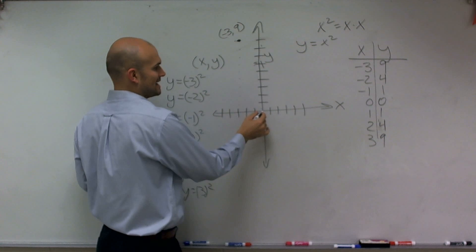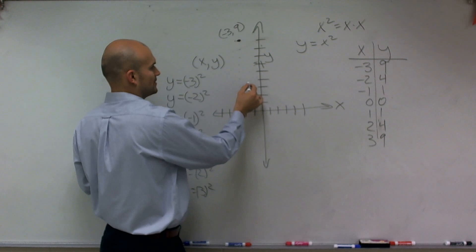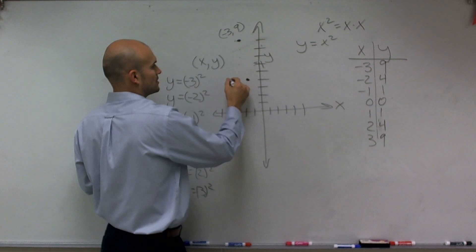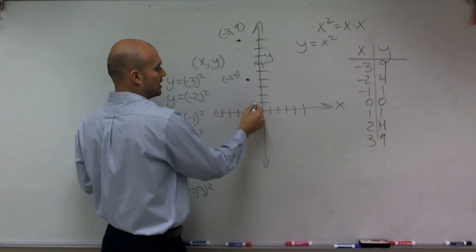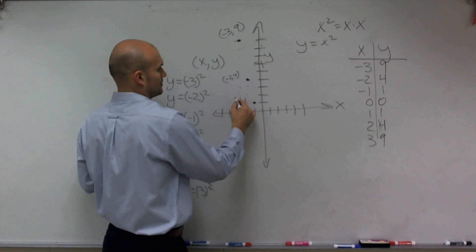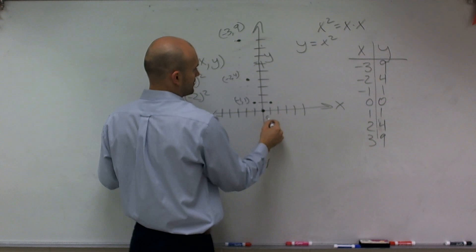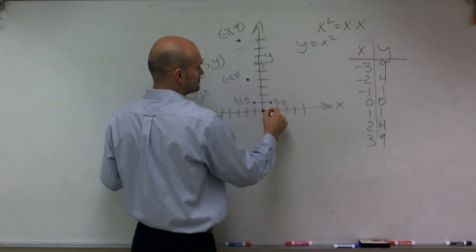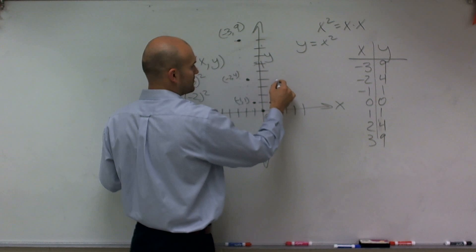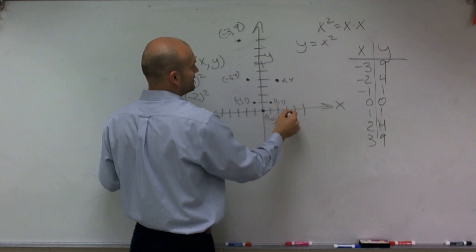Now let's find our next point, negative 2, 4. So now I only go over 2 and then up 4. So I'll write negative 2 comma 4. Then I have negative 1 up 1. Then we have 0, 0, 1 comma 1, 2 comma 4, and then we have 3 comma 9.